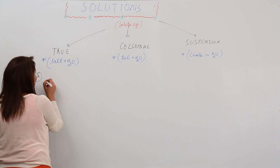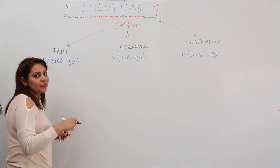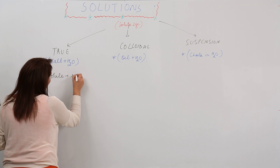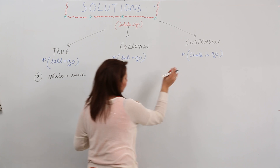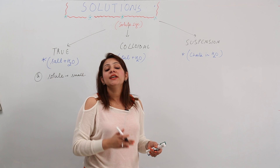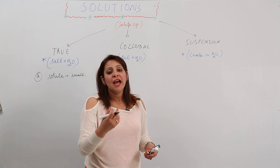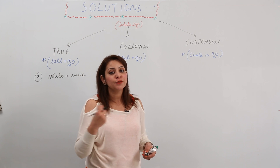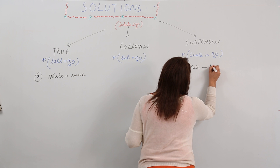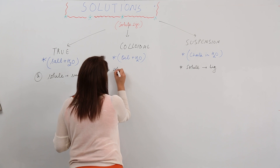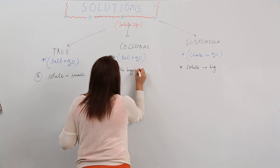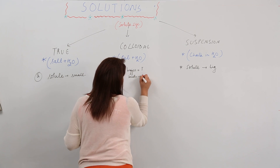In a true solution, when you dissolve salt in water and stir it, you get a homogeneous mixture — that means the solute particle is very small. In suspension, the solute size is too big. In the colloidal solution, the solute size is intermediate — bigger than in the true solution but smaller than in the suspension.